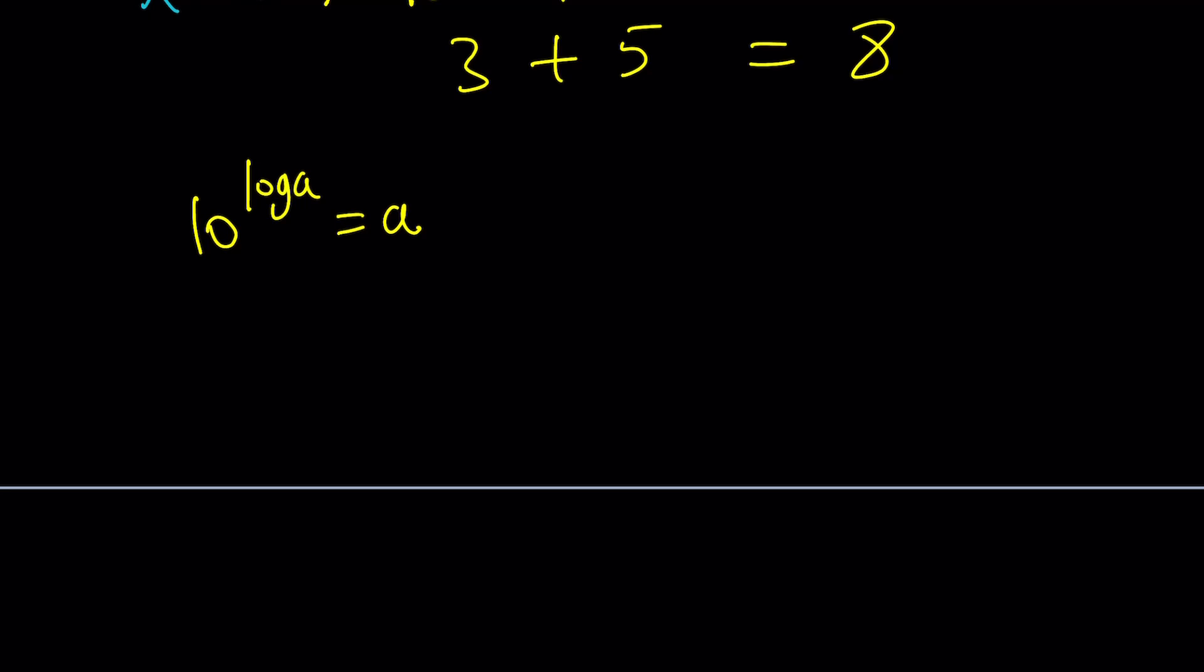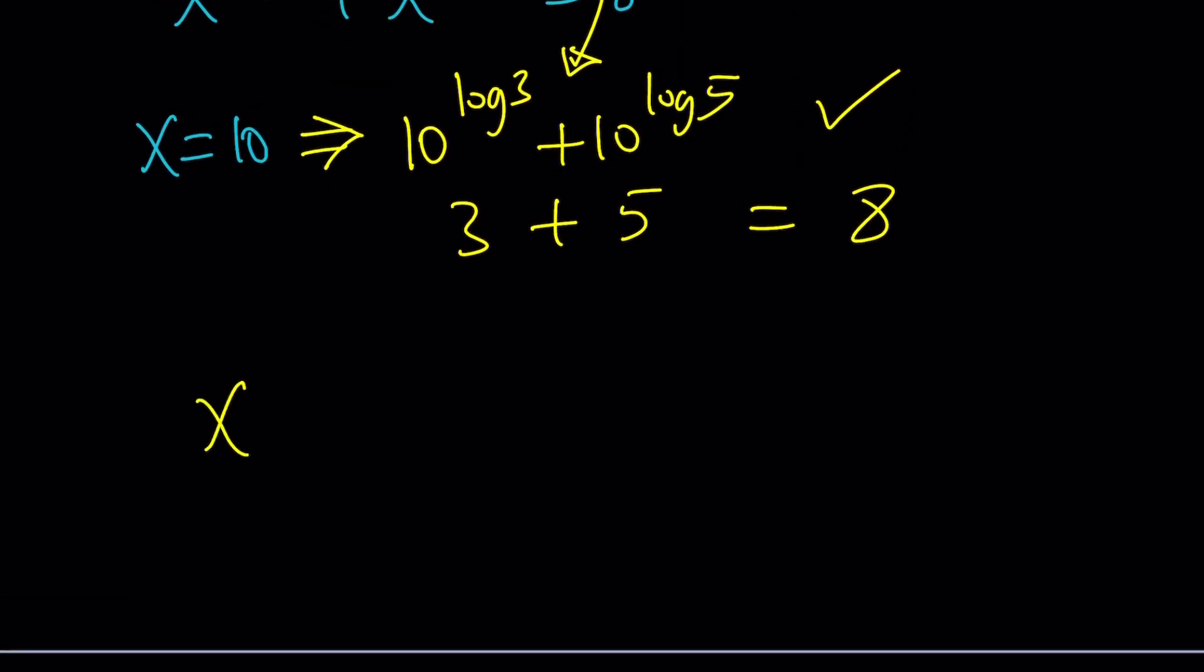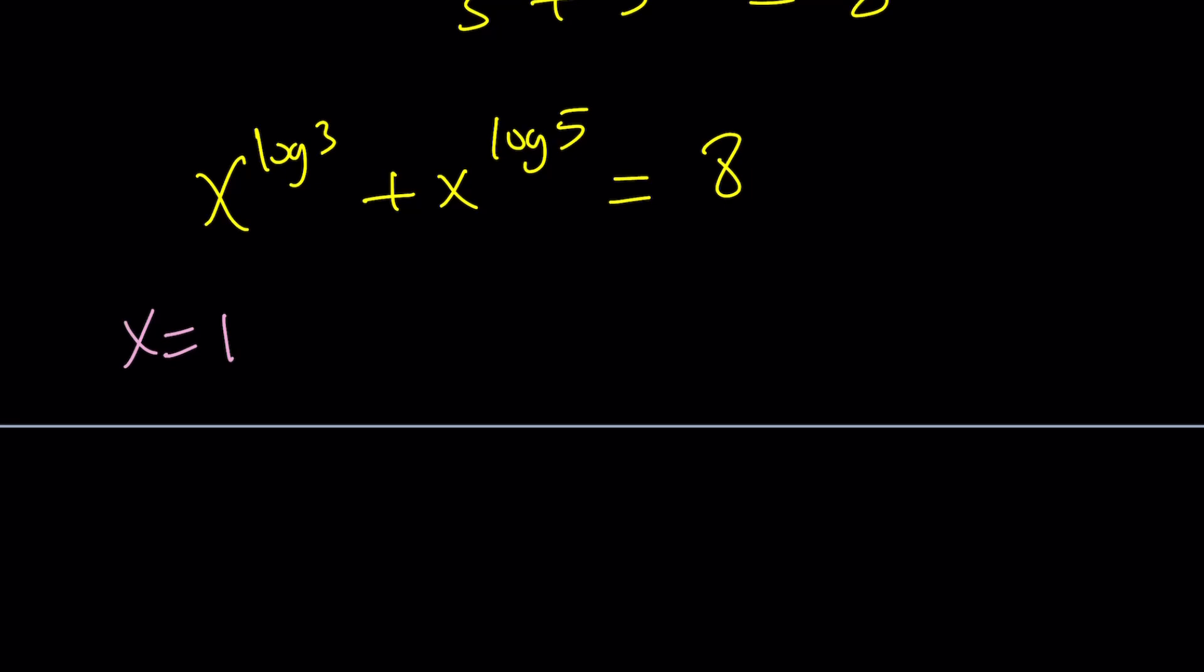So instead of assuming that x is equal to 10, I want to assume, suppose x is a power of 10, because it could be. I mean, any number can be written as a power of 10, including square root of 10. That's 10 to the power of 1 half. So let's go ahead and do this. Set x equal to 10 to the power c.